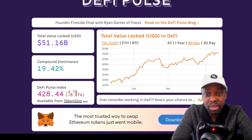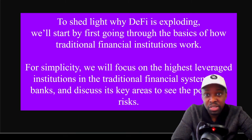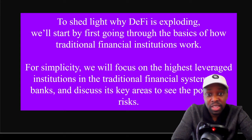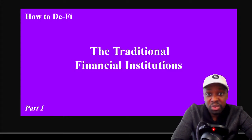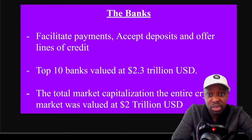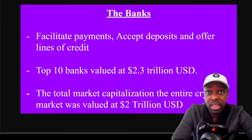To shed light on why DeFi is exploding, we'll start by going through the basics of how traditional financial institutions work. We'll focus on the highest leveraged institutions — the banks. The bank's role in the world is to facilitate payments, accept deposits, and offer lines of credit. The top 10 banks are valued at $2.3 trillion US dollars. The total market cap of the entire crypto market today is around $2 trillion US dollars — so crypto has already reached the capitalization of the top 10 banks. Even though only 1% of the world is using DeFi, there's a lot of money in crypto.